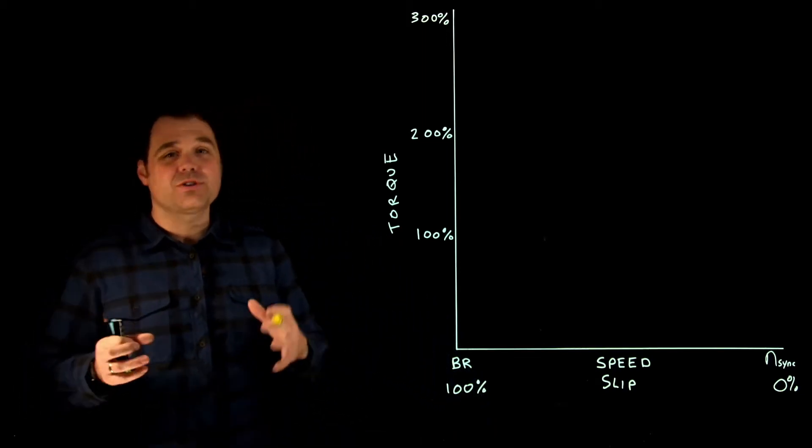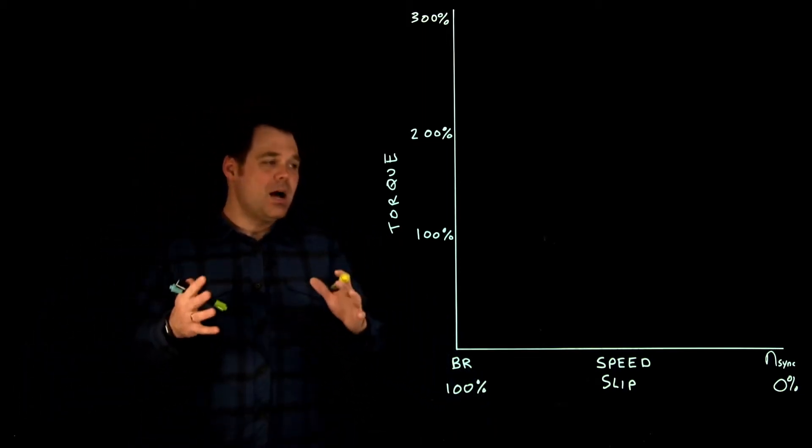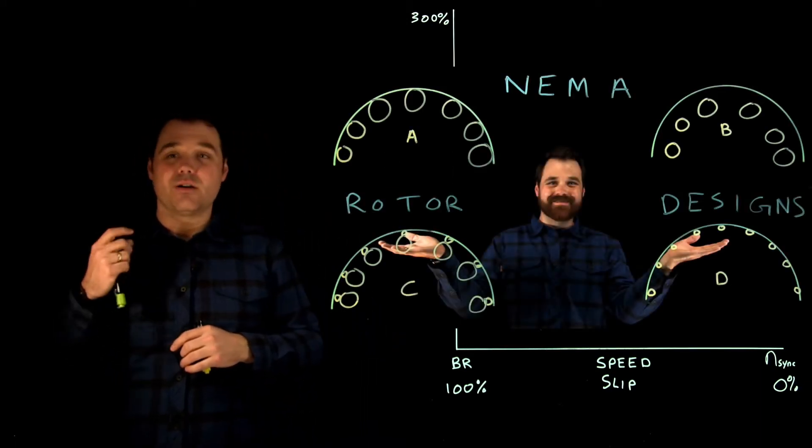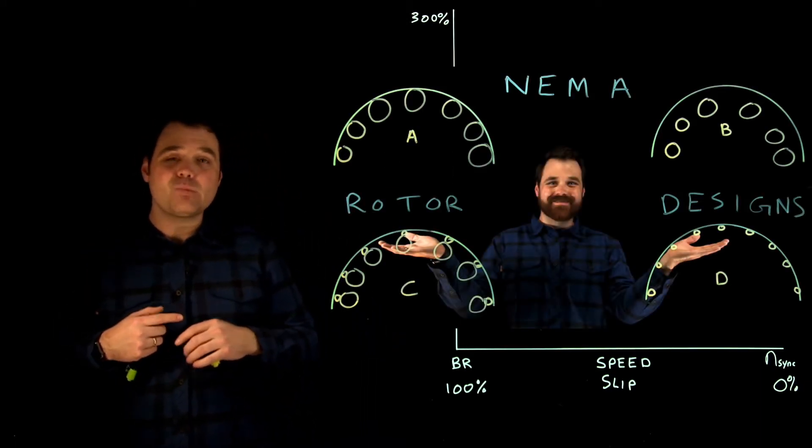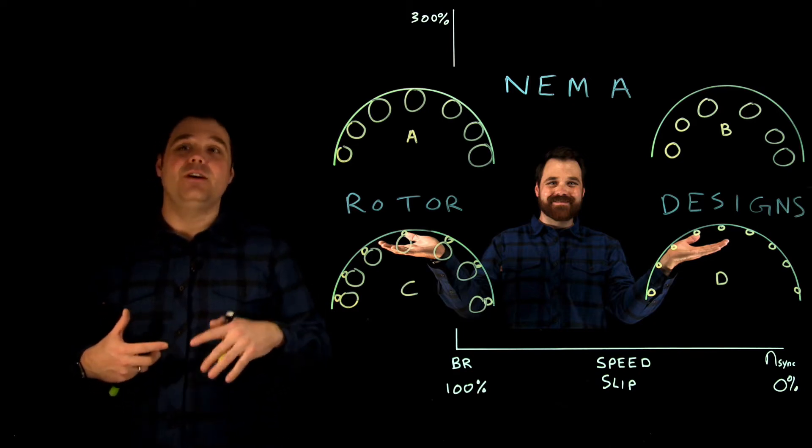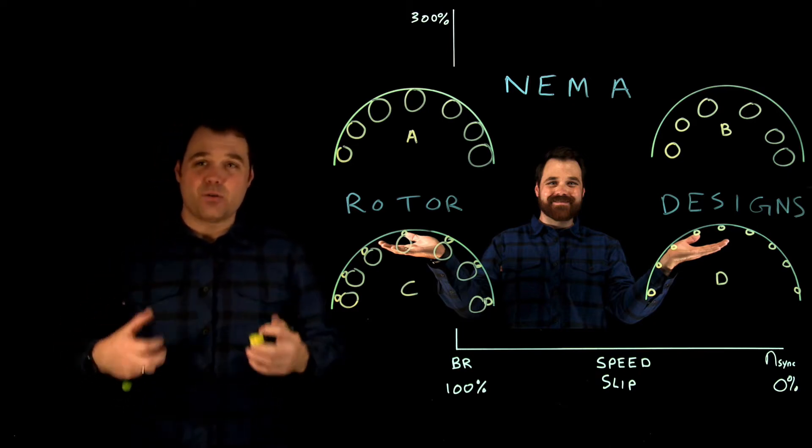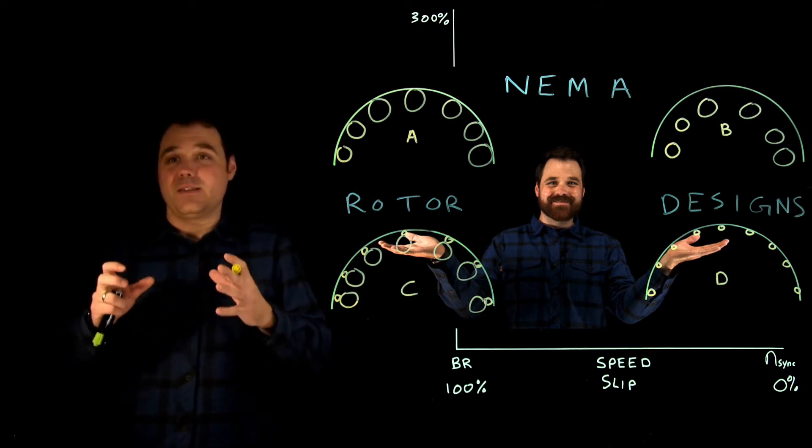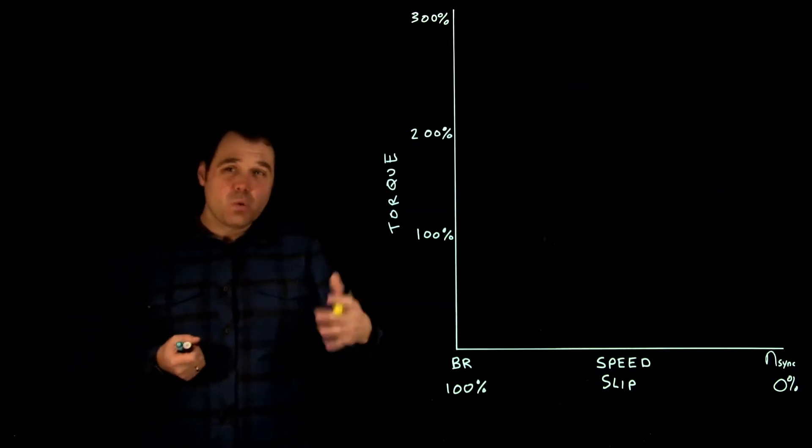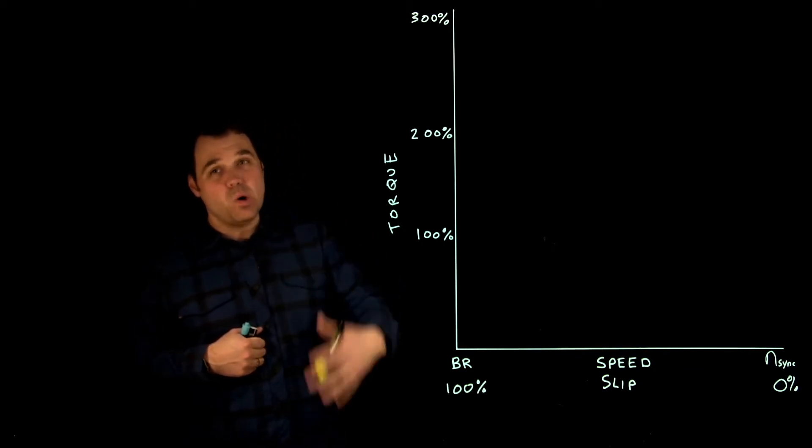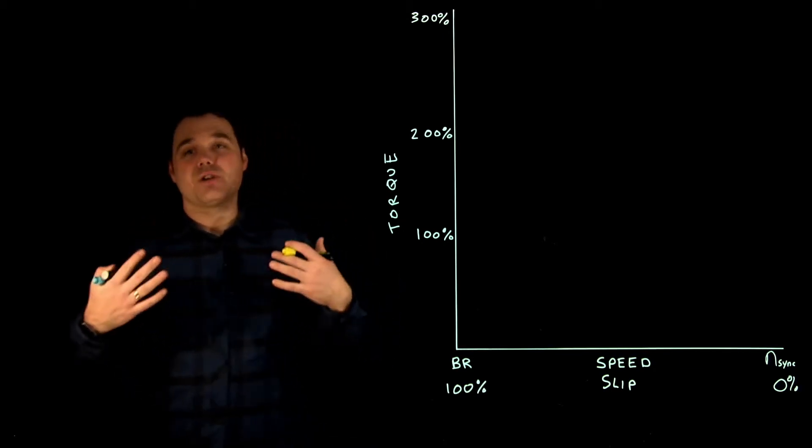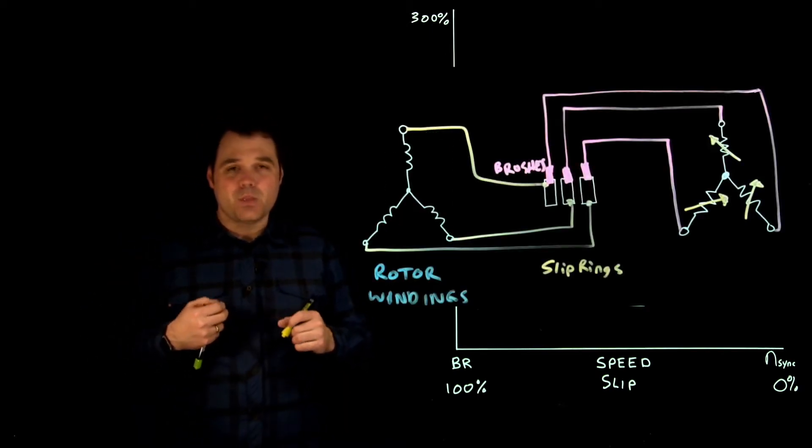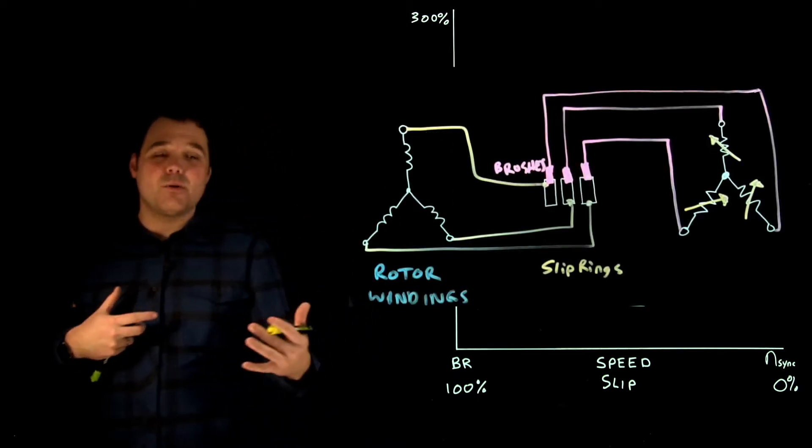Of course, real rotors are going to be a little bit different, but it's important that you understand we're going to talk about four different NEMA designs, which are these four right here. You can check out that other video to get into the specifics of how they're constructed and the actual different design qualities and output of each of them. We're also going to talk about a wound rotor motor output, which I also have another video on. But let's jump into it and talk about this torque.